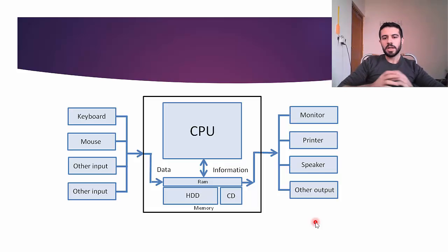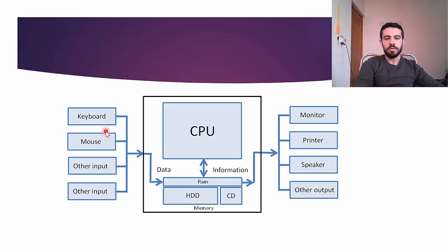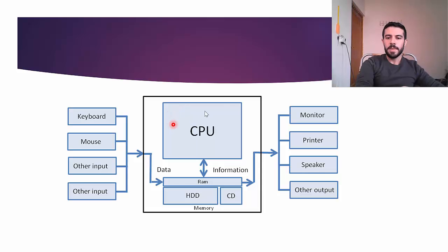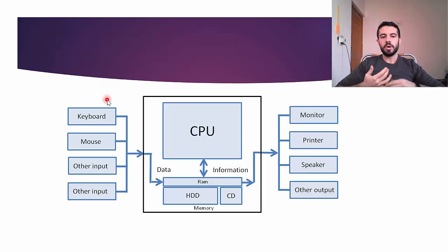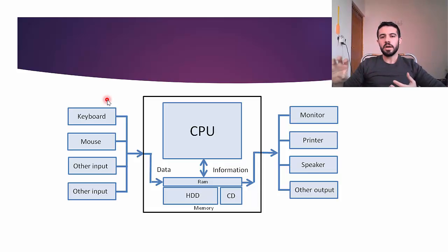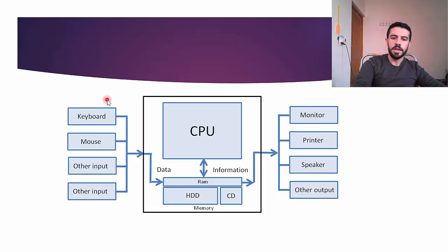As a system, the computer has input on the left side, processing in the middle — with many parts inside the case — and output on the right. Input devices include keyboard, mouse, webcam, or other devices that insert data into the computer, such as typing instructions or using a camera.